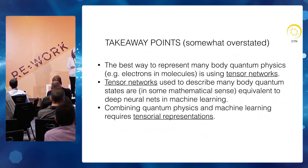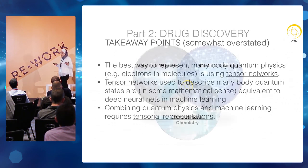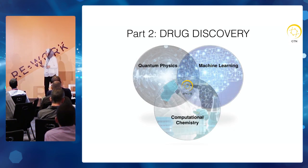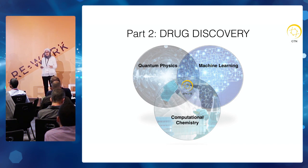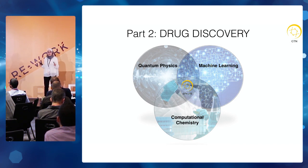What we're trying to do with GTN is basically combining these three areas — machine learning, quantum physics — and applying it to pharmaceutical drug discovery. We believe this unique combination is crucial in order to solve the fundamental problems in drug discovery.